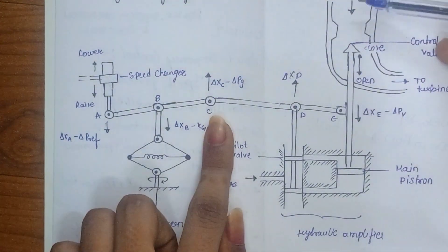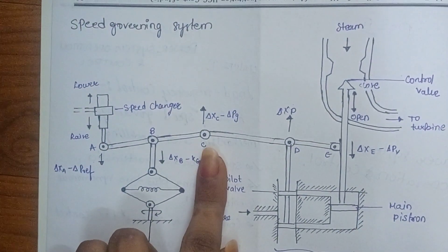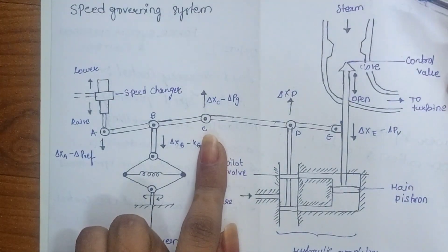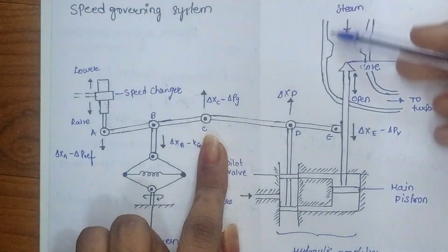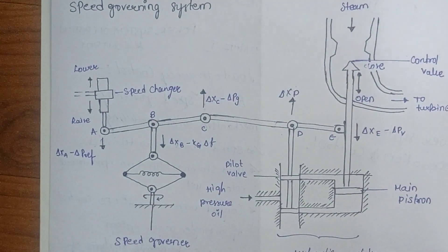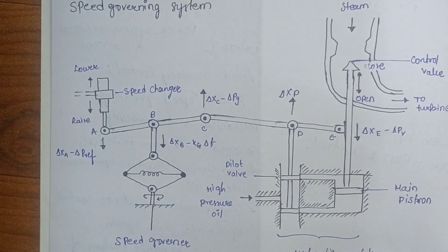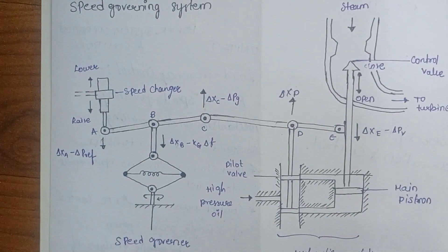In this position we have steam and water flow. The steam and water flow goes to the turbine, which increases the output power. So this is the speed raise: A and B move downwards, C and D move upwards, and E moves downwards. This increases the steam and water flow, which increases the generator output power.